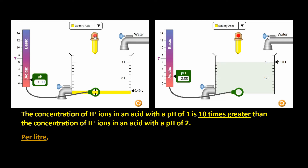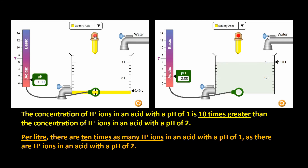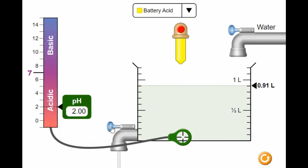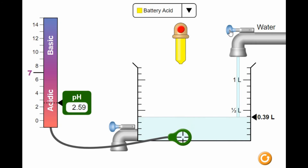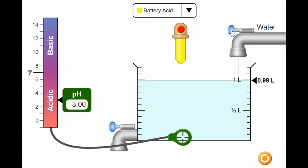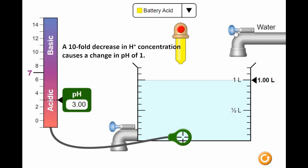Per liter, there are 10 times as many H+ ions in an acid with a pH of 1 as there are H+ ions in an acid with a pH of 2. I can now drain my pH 2 acid, leaving just 0.1 liters of it, and then add water so that the concentration of H+ ions decreases by a factor of 10. The pH before I added water was 2, and since its concentration is now only one-tenth of what it was, its pH is now 3. A tenfold decrease in H+ concentration causes a change in pH of 1, from 2 to 3 this time.